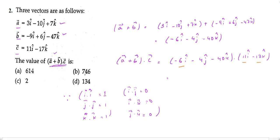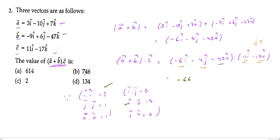Multiplying −6i with 11i: −6 × 11 = −66, and i·i = 1, so we get −66. Then −6i × (−17k): i·k = 0, so we neglect that. The −4j terms also give 0 since c has no j component. Then −40k × (−17k): −40 × −17 = 680, and k·k = 1, giving +680.